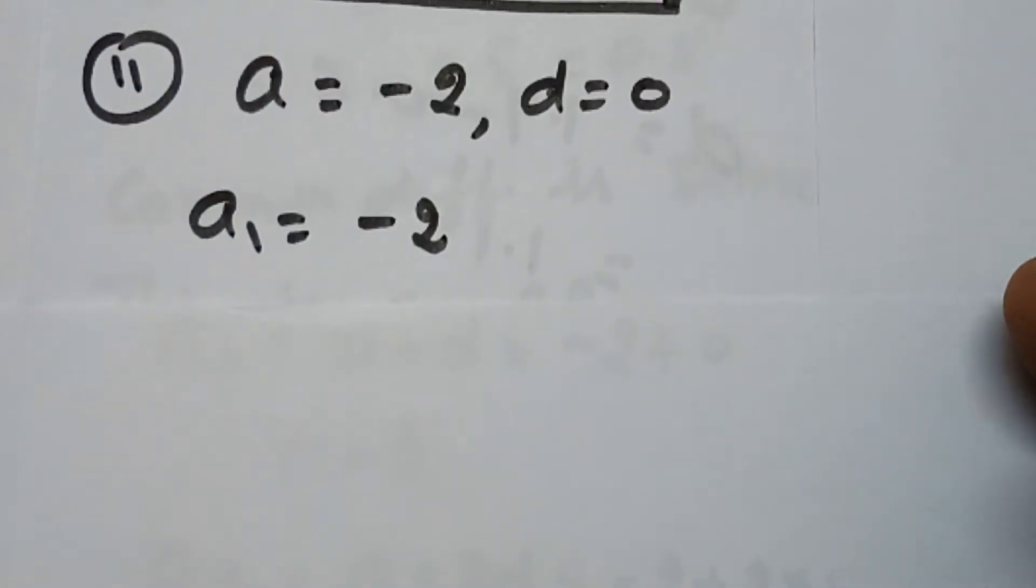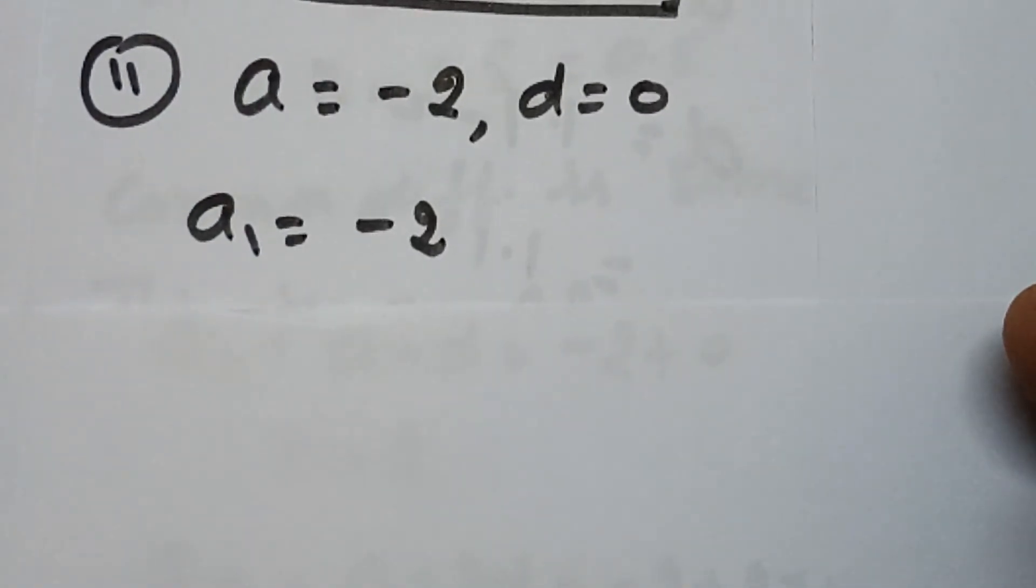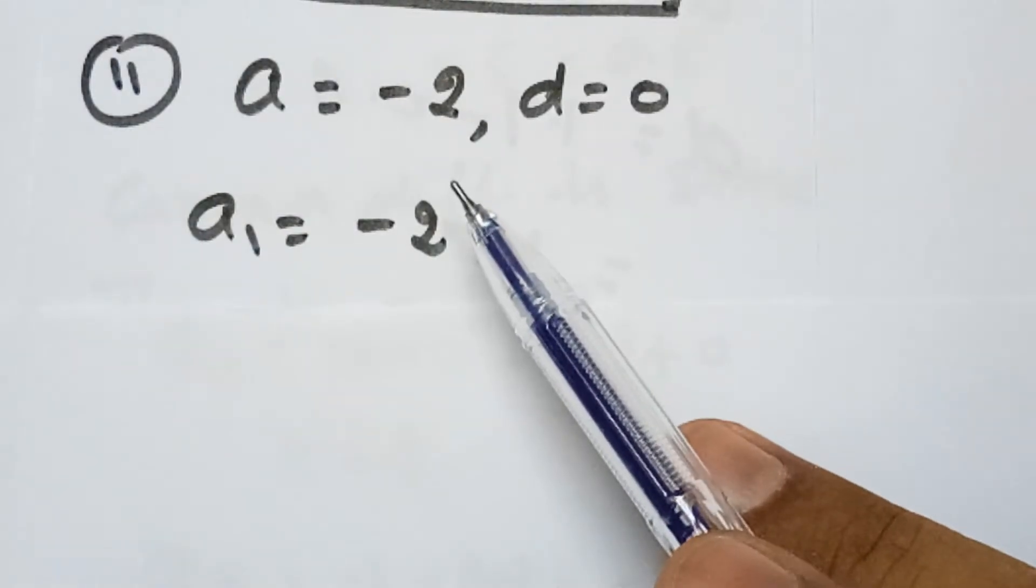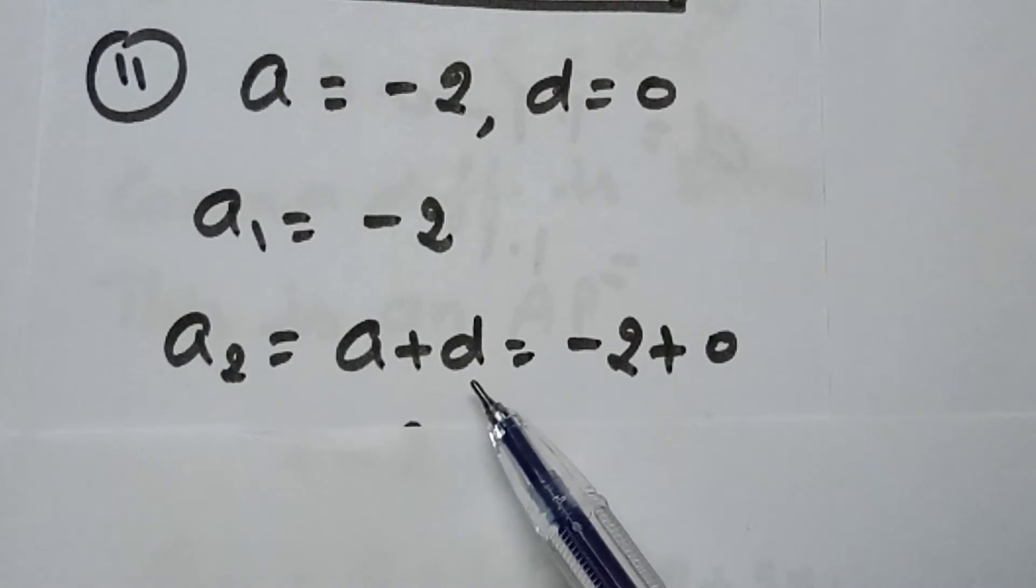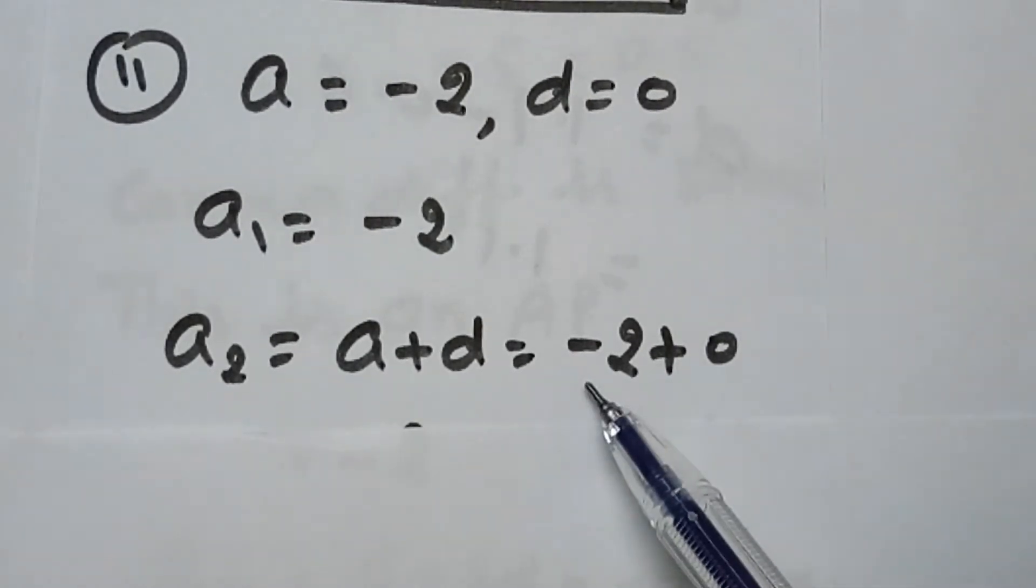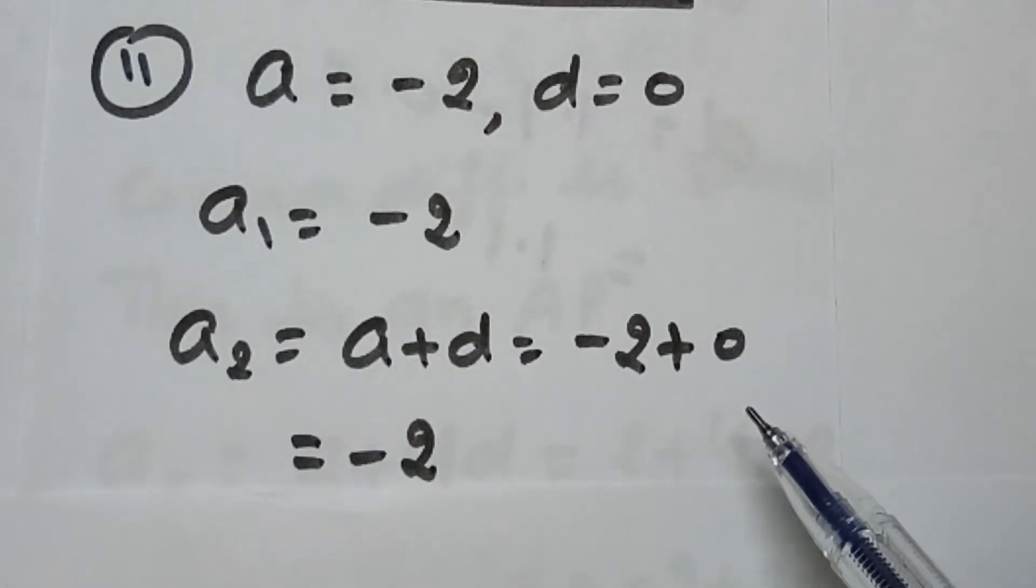Second term. To find the second term, we will add D, the common difference, to the first term. So the second term can be calculated as A₂ equals A plus D. A is minus 2 plus 0, which equals minus 2.